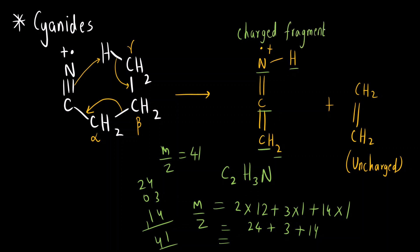So here we come to the end of this video. I hope you have understood in detail the two different types of mechanisms of McLafferty rearrangement and how McLafferty rearrangement takes place in all three compounds — ketones, aldehydes, and cyanides. In the next video we will see some questions based on McLafferty rearrangement that were asked in previous year papers. Thank you so much.